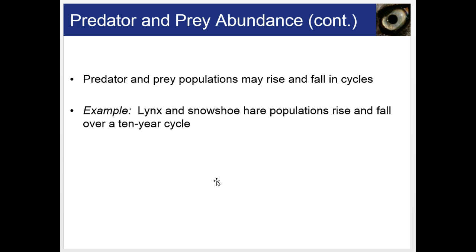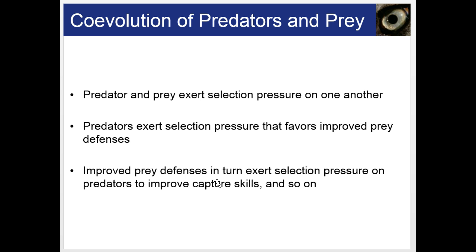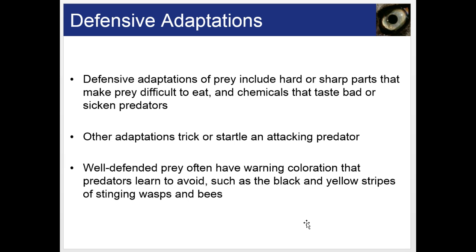Predator and prey exert selection pressure on one another. Predators exert selection pressure that favors improved prey defenses, and improved prey defenses in turn exert selection pressure on predators to improve their capture skills — so they co-evolve together. Defensive adaptations of prey include hard or sharp parts that make prey difficult to eat, and chemicals that taste bad or sicken predators. Other adaptations trick or startle an attacking predator. Well-defended prey often have warning coloration that predators learn to avoid, like the black and yellow stripes of stinging wasps and bees.